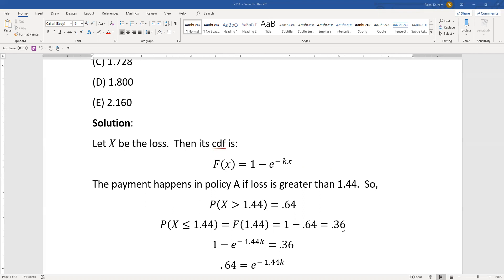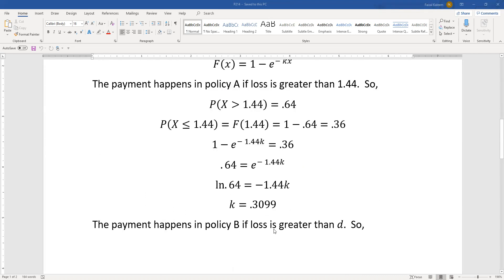0.36. Now we substitute 1.44 into the CDF for x, so 1 minus e to the negative 1.44k equals 0.36. Taking the e term to the right side and 0.36 to the left, then taking the natural log and dividing by negative 1.44, we get k equals 0.3099.